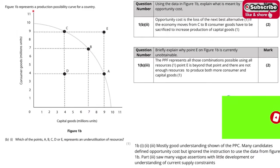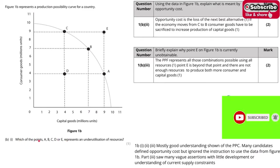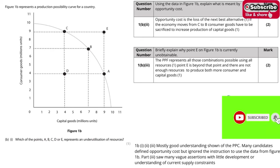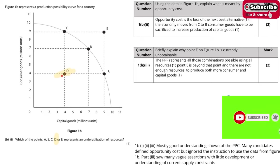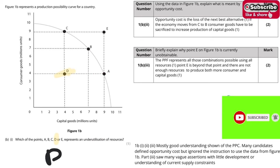Now let's move on to 1B1. We have to identify the point that represents under-utilization of resources. That must be D. From point D, you can move to C or A without sacrificing the others, so the answer is D. This is very straightforward and easy.